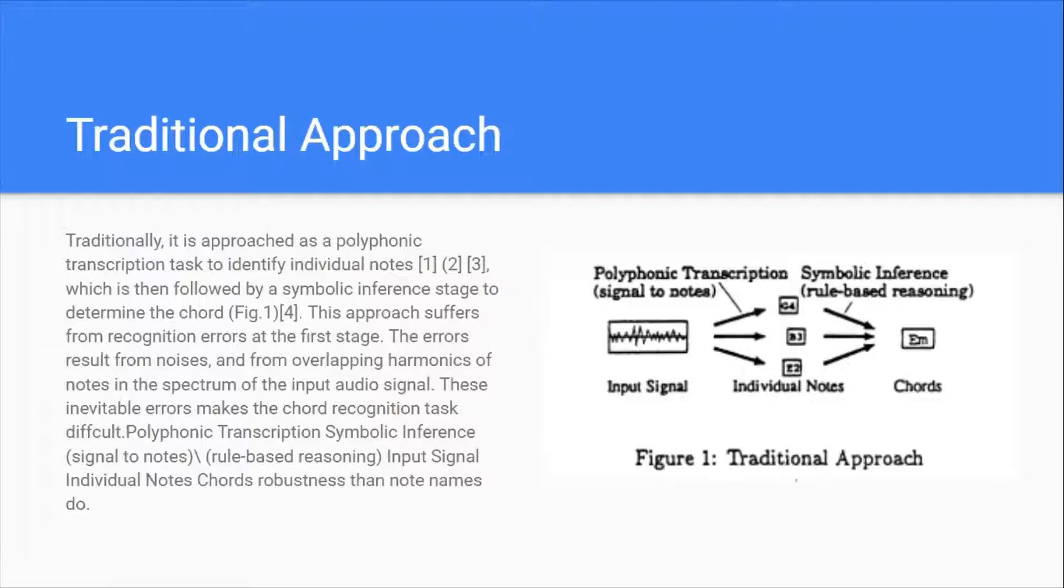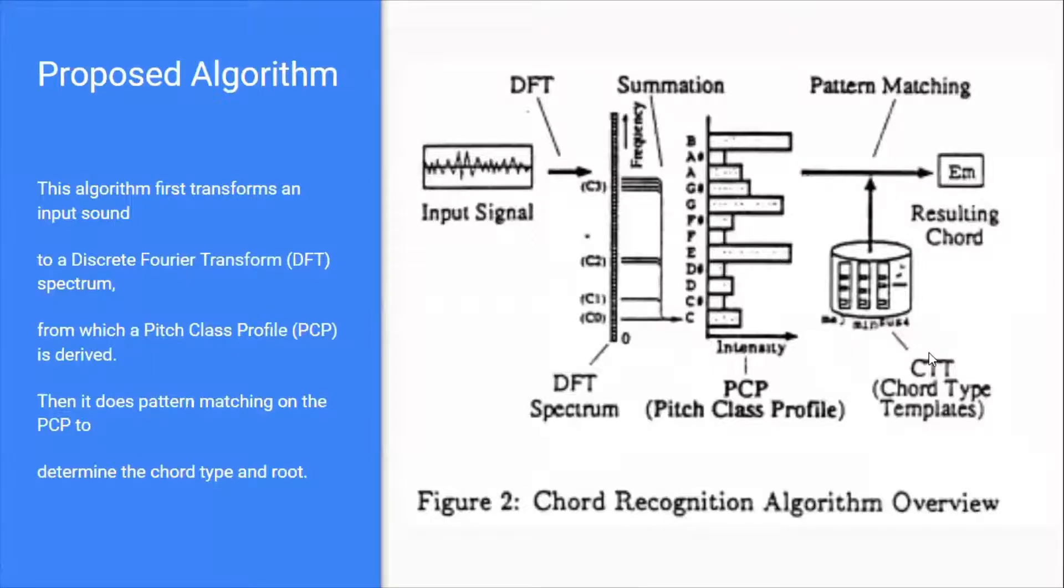This is the traditional approach. In the figure you can see input signal, then the input signal is used to detect individual notes where no harmonics are considered, no noise is considered, and there will be an output chord. That output chord will have greater probability of being error or incorrect.